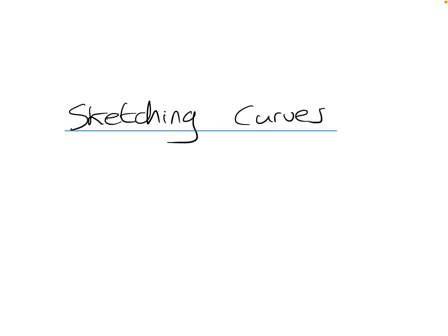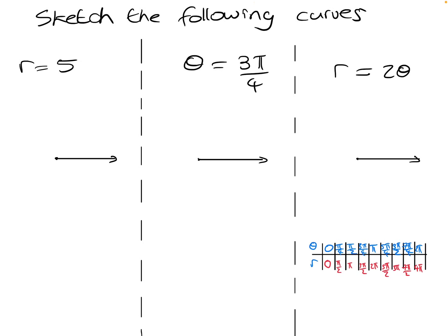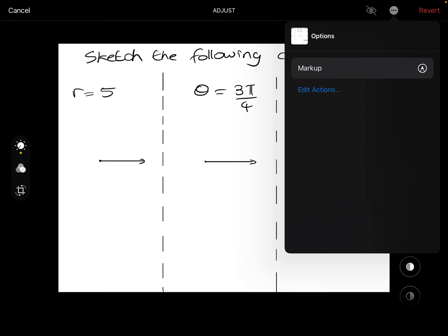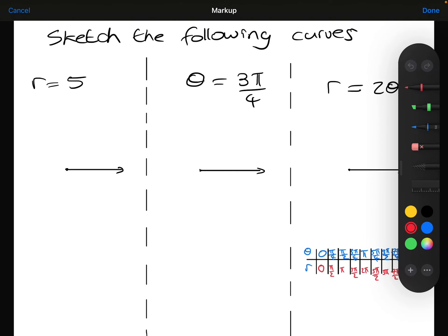This video is all about sketching curves when they're given in polar coordinate, polar equation form. We're going to start with three simple examples, and then look at three more complicated examples. The first two are pretty simple: the first one is when the radius is constant, and the second one is when the angle is constant.